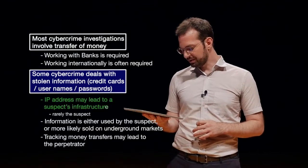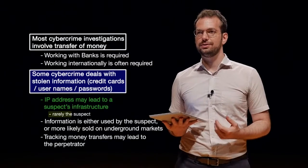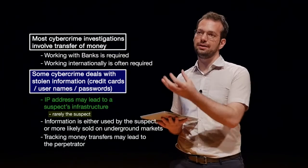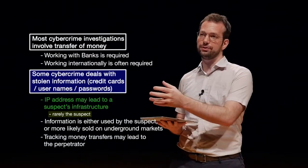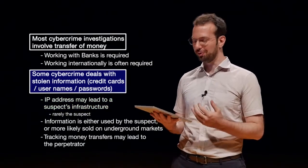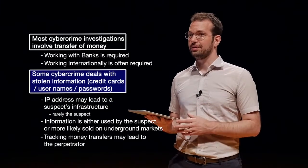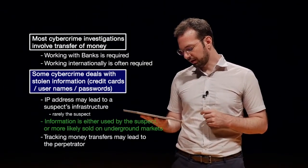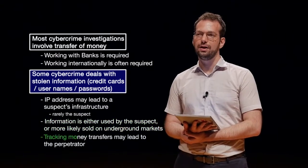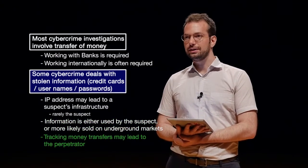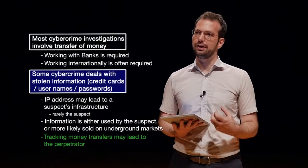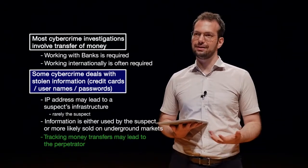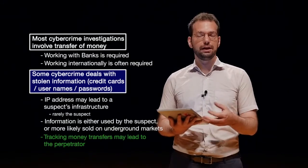IP addresses may lead to a suspect's infrastructure, but rarely the suspect directly. Most suspects, especially skilled cybercriminals, will have infrastructure set up in multiple countries and send all of their stolen information to that infrastructure — not necessarily their home address or home IP address. They still have to transfer that data back to themselves, so that's normally a way we can track them. Tracking money transfers is really one of the best ways to identify a person, because people have to get the money out of the account somehow, and once they do, we can potentially identify anyone who was involved.